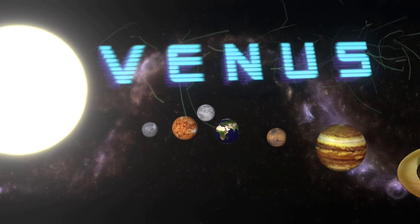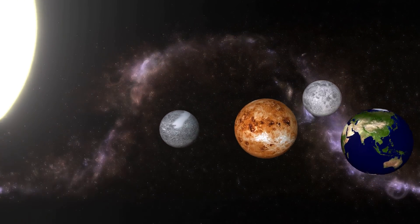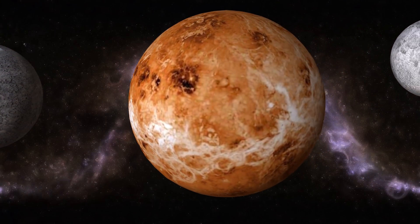Venus is the brightest planet in our solar system, has a hellish atmosphere, and is covered in volcanoes.